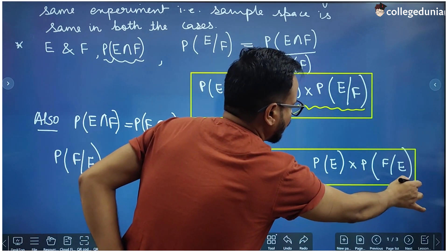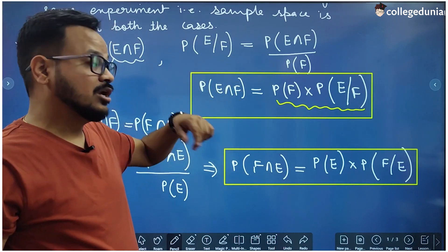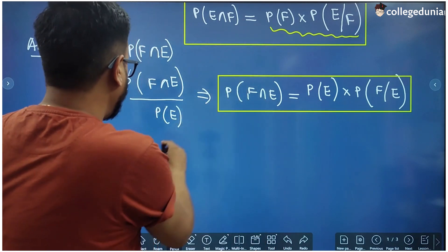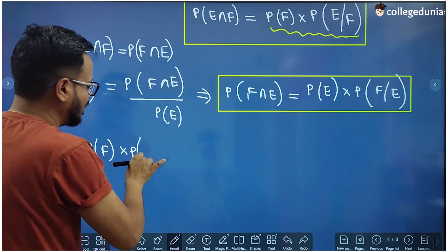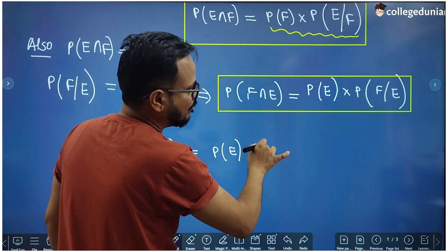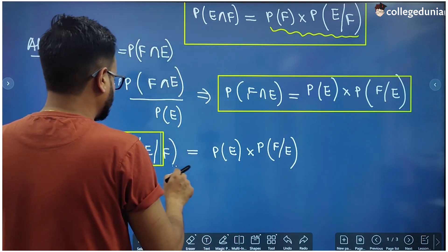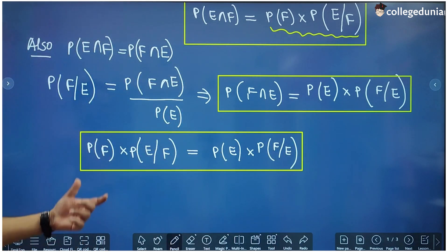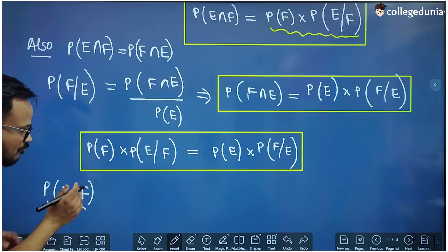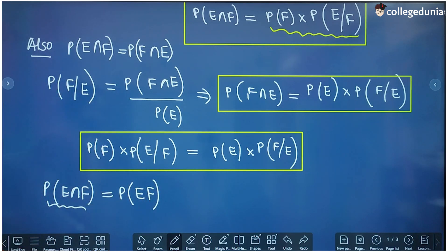From this discussion, since we know both expressions are equal, we can write that P(F) · P(E|F) equals P(E) · P(F|E). Just remember: P(E∩F) is the main thing we want to find, and the formula is either form. This can also be written as P(EF) without the intersection sign — both have the same meaning.